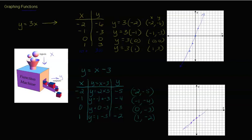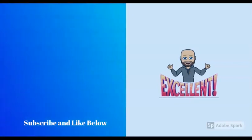Now look at the slope — remember, slope is rise over run. On y equals 3x, we go up 3 over 1 each time — up 3 over 1, up 3 over 1. On y equals x minus 3, we go up 1 over 1 each time. That's because the number in front of X is our slope. So the coefficient of X tells you the slope. If you liked this video, make sure to subscribe and like below — and remember to be more awesome!